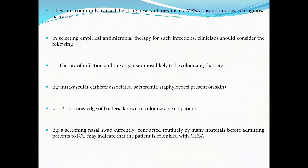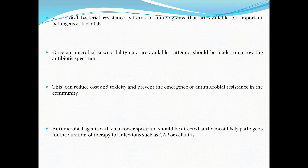In selecting empiric antimicrobial therapy for such infections, clinicians should consider the following: the site of infection and the organism most likely to be colonizing that site — for example, intravascular catheter-associated bacteremia with staphylococci present on skin. Prior knowledge of bacteria known to colonize a patient is important — for example, a screening nasal swab conducted routinely by many hospitals before admitting patients to ICU may indicate that the patient is colonized with MRSA. Local resistance patterns or antibiograms should also be considered. Once antimicrobial susceptibility data are available, attempts should be made to narrow the antibiotic spectrum to reduce cost, toxicity, and prevent emergence of antimicrobial resistance.